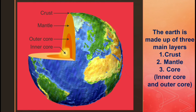The earth is made up of three main layers: crust, mantle, and core. The core is further divided into two — inner core and outer core.